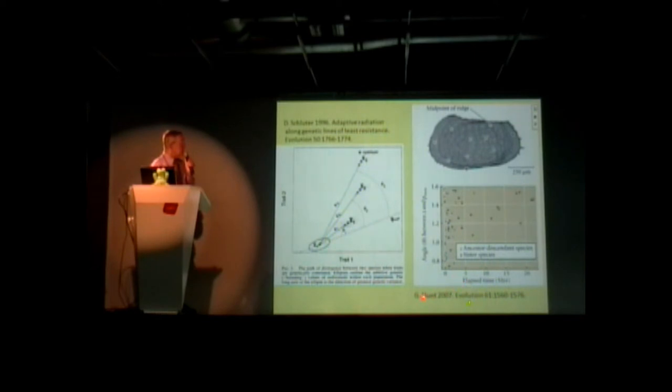Here, for example, is Gene Hunt analyzing a species of ostracod in the fossil record, and he finds that the amount of deviation from the line of greatest genetic variation—that evolving far away from that line takes a longer time on average than to evolve just a short way from that line.